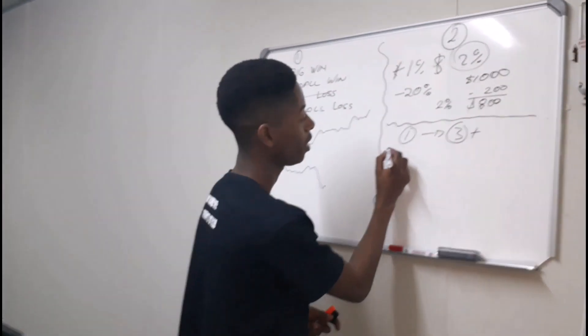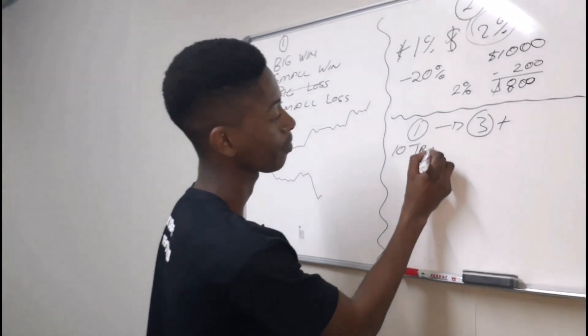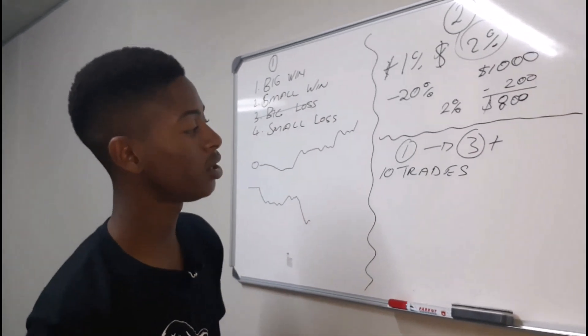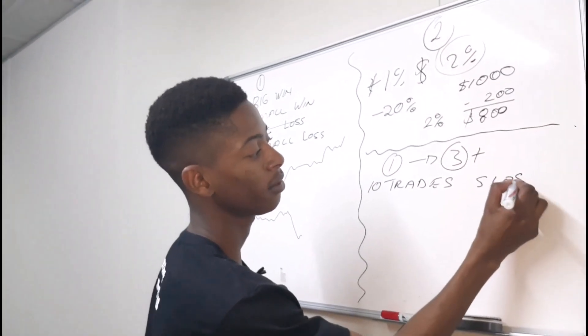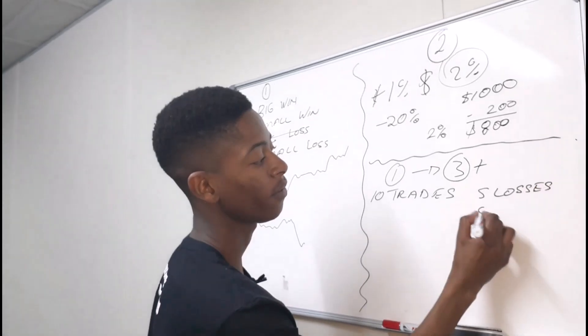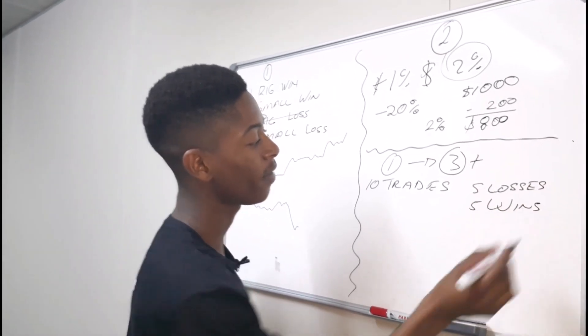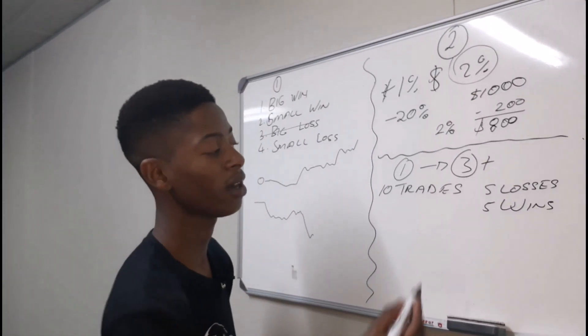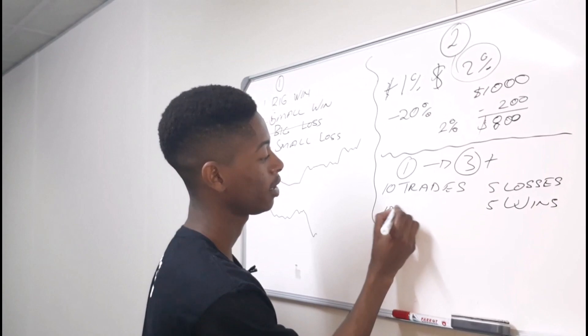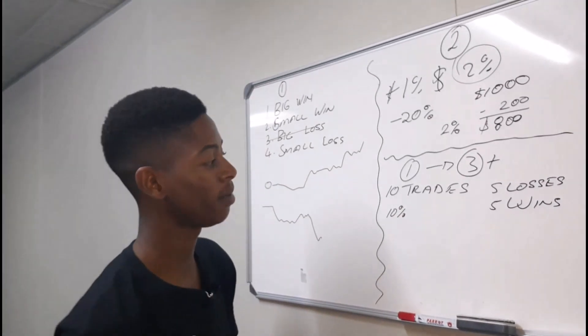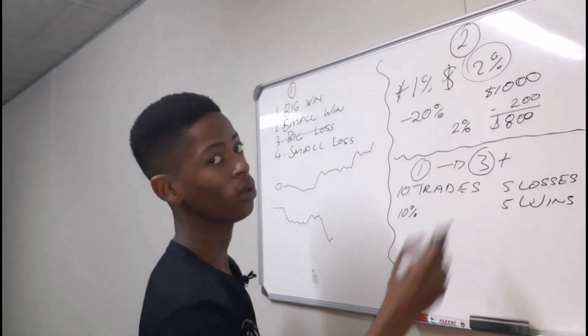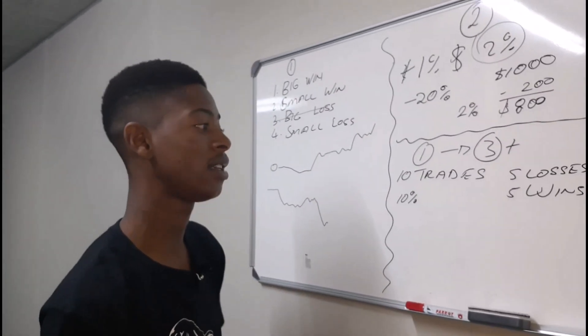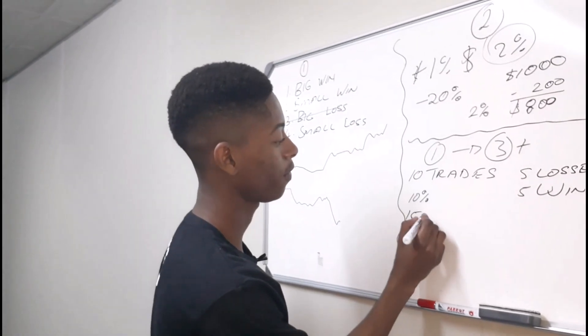Meaning that even if you have 10 trades, and out of the whole 10 trades, you experience 5 losses and even 5 wins. You've lost, out of 5 losses, you're risking 2%, which makes it around 10%. So you lost 10% because it's 5 times 2, 10%. So now, let's say your reward is 3. Whenever you risk 1, your reward is 3. So now you've won 5 trades. So it is 5 times 3, which makes it a number like 15%.